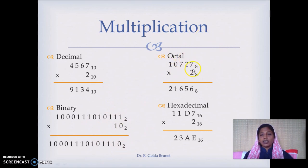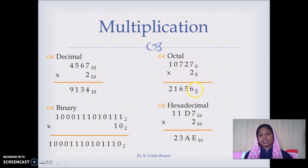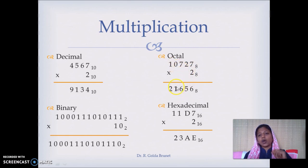For octal multiplication: 7 times 2 is 14 in decimal, which converts to 16 in octal, so we write 6 and carry 1. 2 times 2 is 4 plus 1 is 5. 7 times 2 is 14, converted to octal is 16, write 6 and carry 1. 2 times 0 is 0 plus 1 is 1, and 1 times 2 is 2.